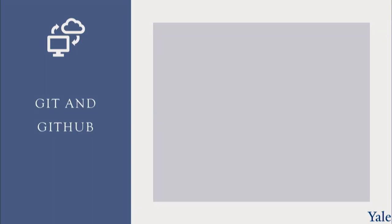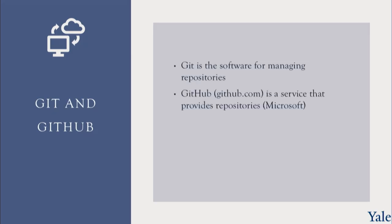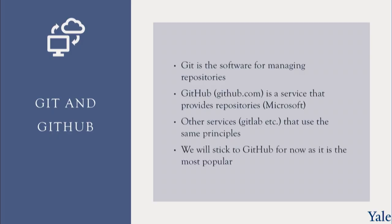Git and GitHub are a pair. Git is the software for managing the repositories, and GitHub — github.com — is a service that provides repositories, now owned by Microsoft. There are other services, GitLab for example, that use the same principles, but we'll stick to GitHub because it's by far the most popular and most commonly used.